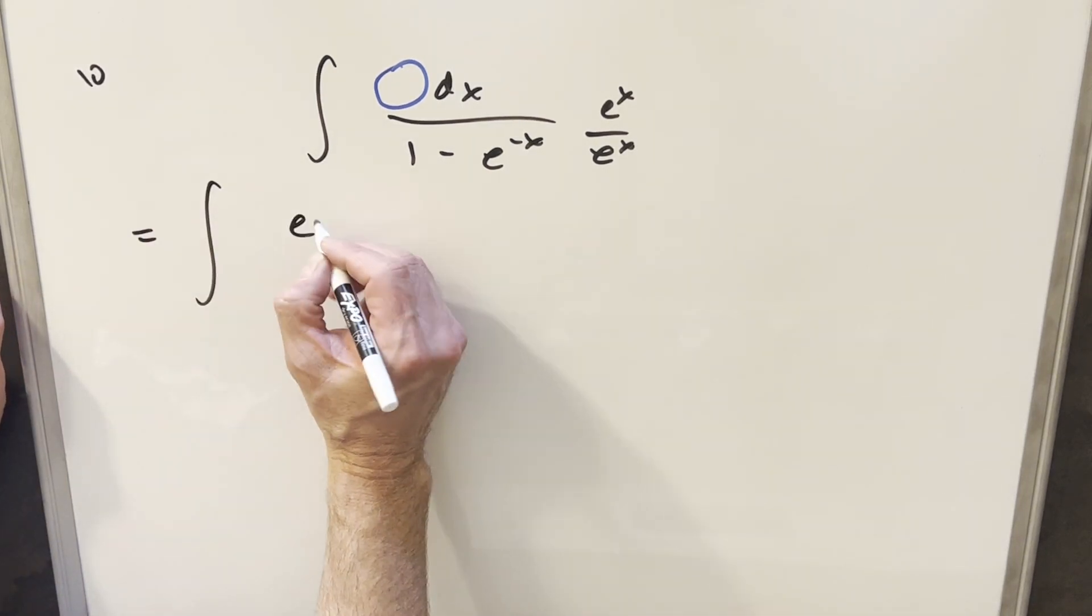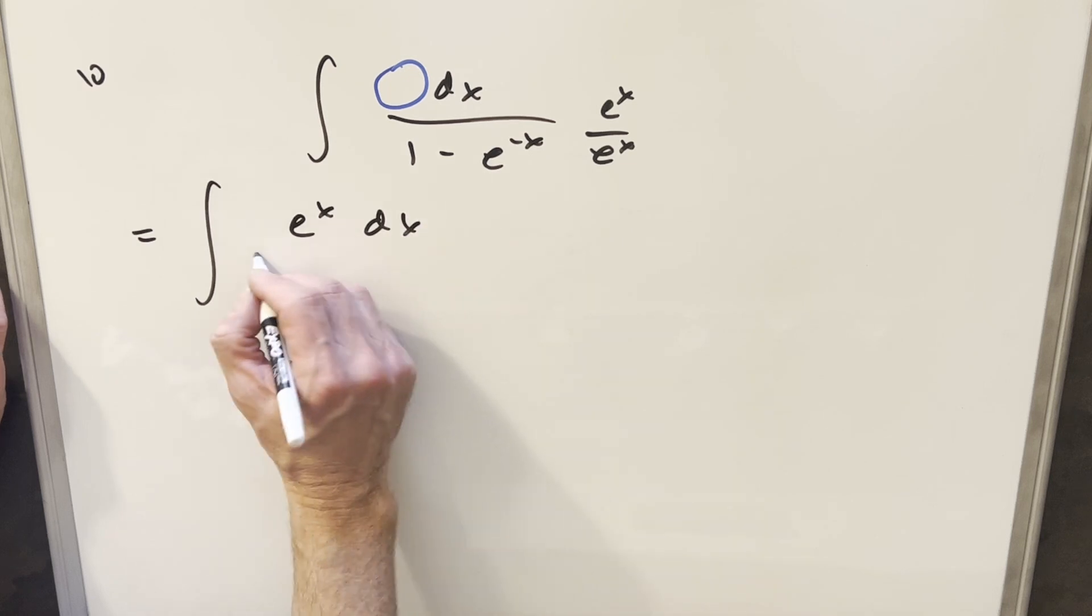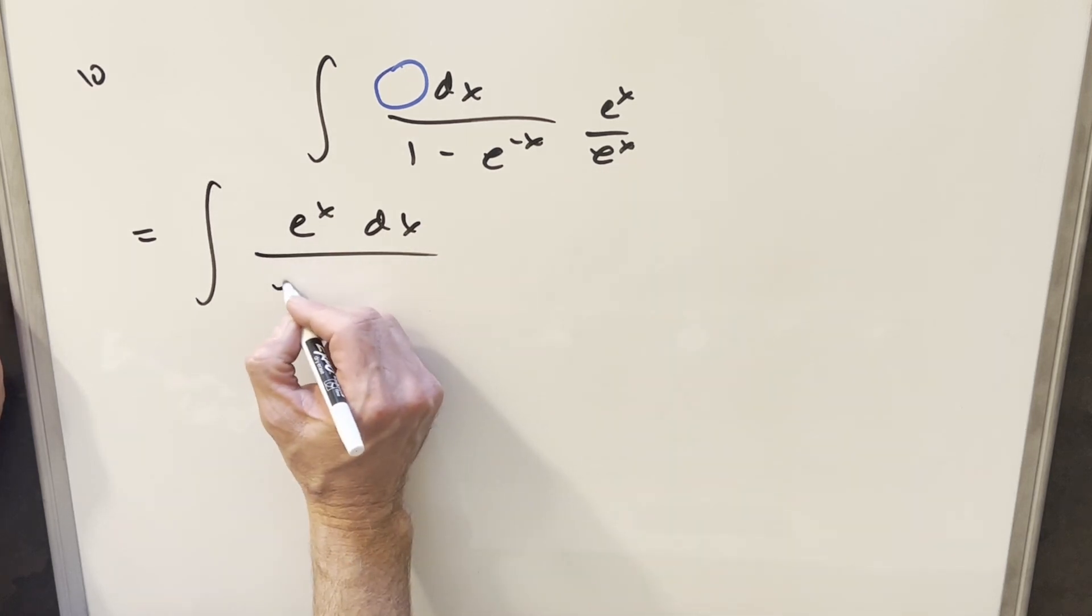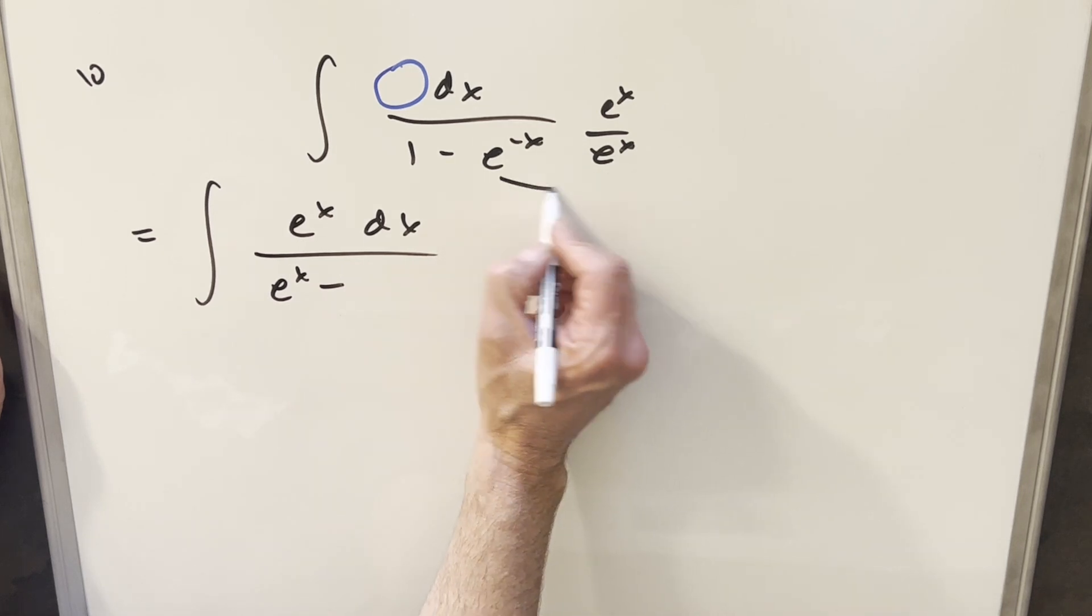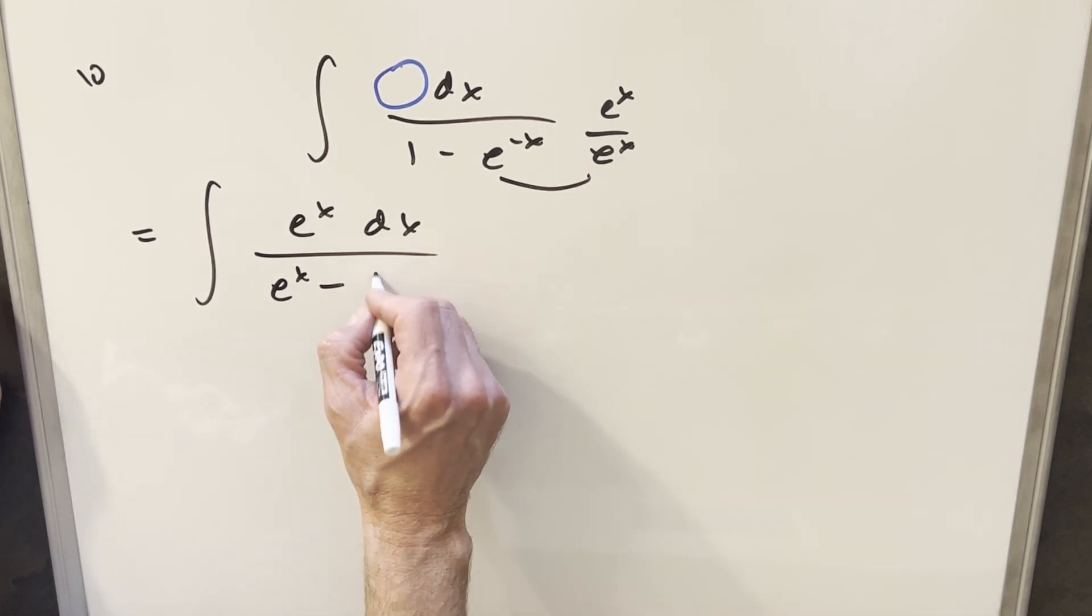So when we do that, in the numerator, we'll have e to the x dx. Multiplying this in here, we're going to end up with e to the x minus, when we multiply these together, we get e to the 0, or just 1.